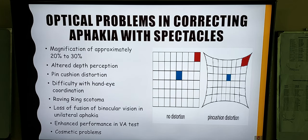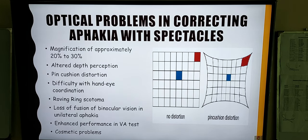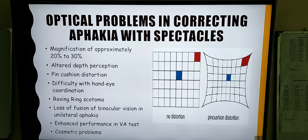There will be enhanced performance in the visual acuity test as magnification is occurring with that eye. For example, in the Snellen chart, if an aphakic patient with spectacles has a visual acuity of 6/9, it will be approximately equal to 6/12 visual acuity. And obviously there will be cosmetic problems as well due to the thicker lenses, and the eyes will appear magnified behind the spectacles.